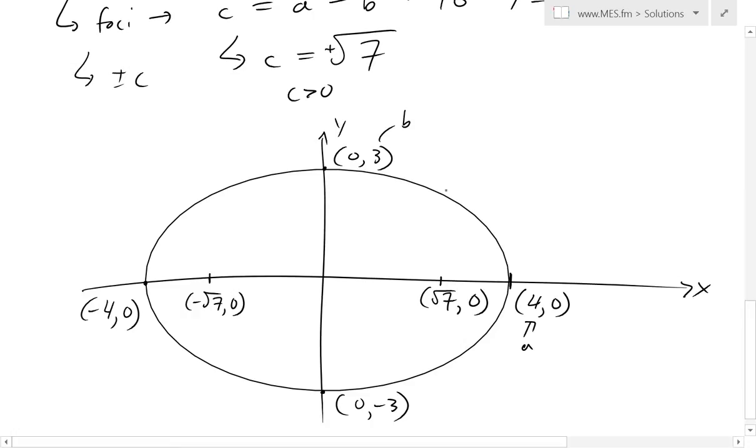And this is basically the graph of that equation, x squared over 4 squared plus y squared over 3 squared equals to 1. So that is the graph of it, and these are the foci points right here.